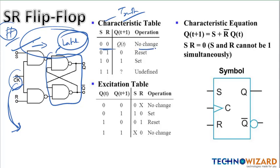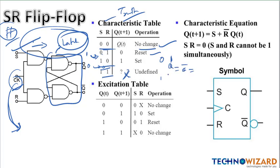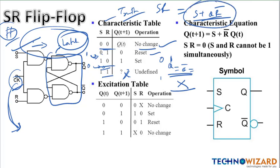In the SR flip-flop truth table: at S=0, R=0 there is no change — if the previous output is one, it stays one. At S=0, R=1 it resets — all values go to zero. At S=1, R=0 it sets — output goes to one. At S=1, R=1 it is a don't-care state, because Q and Q-bar would both be equal, which is not possible. The characteristic equation is Q(next) = S + Q·R̄.